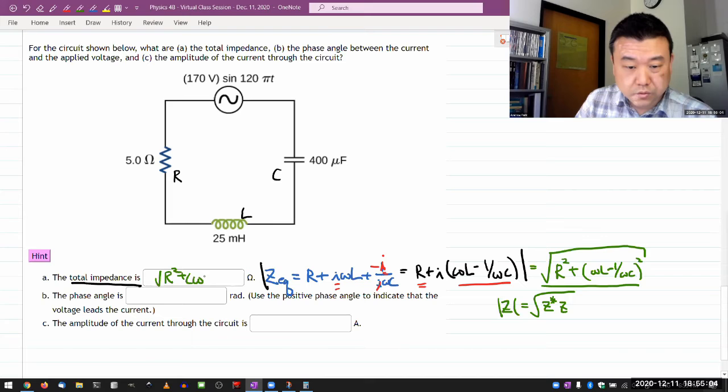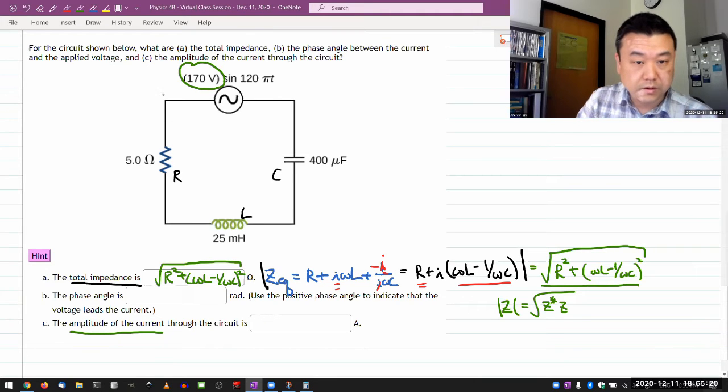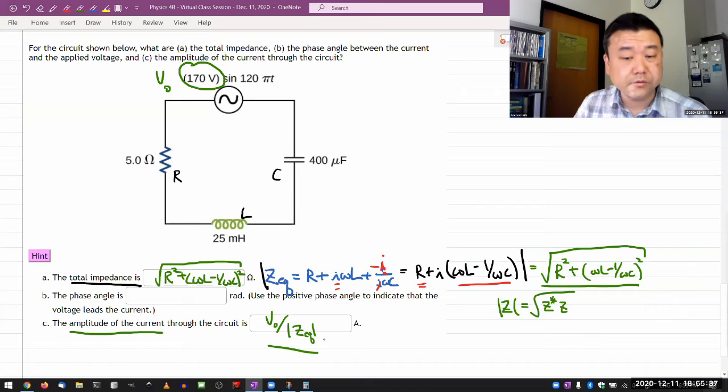And once you know the magnitude of the total impedance, then it's quite simple to find the amplitude of the current. Because since I know the amplitude of the voltage, amplitude of current, so let me label that V naught. Amplitude of current is simply V naught divided by the absolute value of the total impedance.